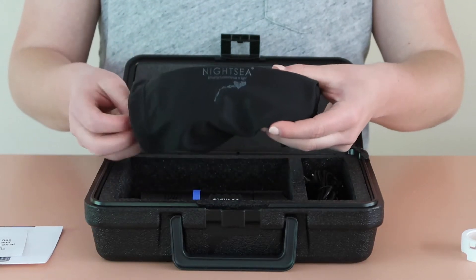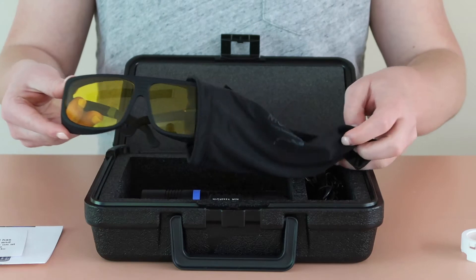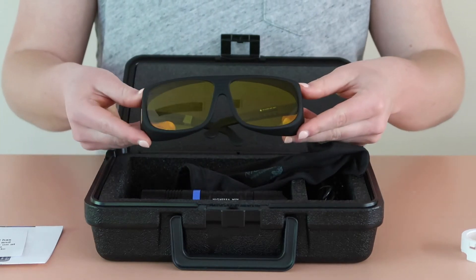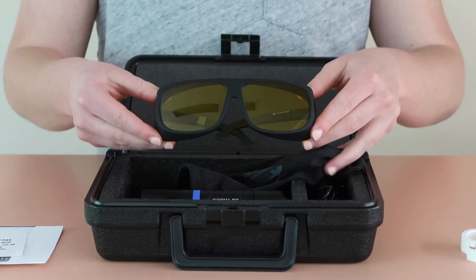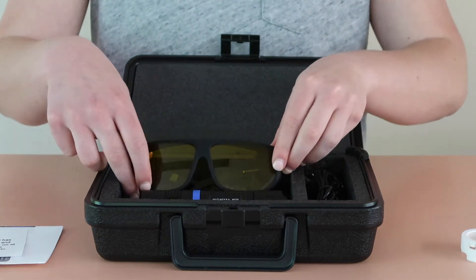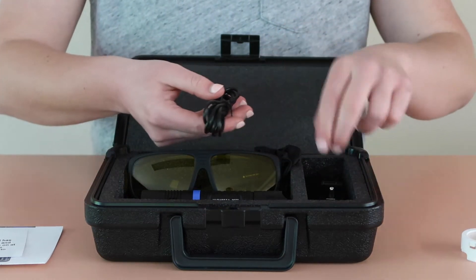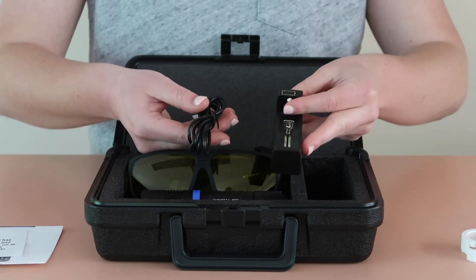Each Exite system comes with barrier filter glasses that are matched to the excitation source. They are packed in a microfiber cloth that's great for cleaning. Finally, the battery charger and USB charging cord.